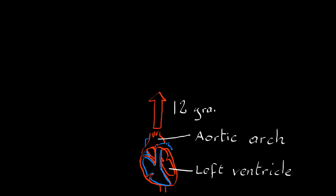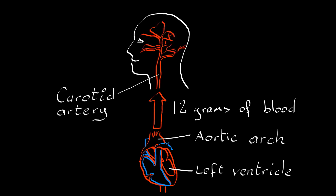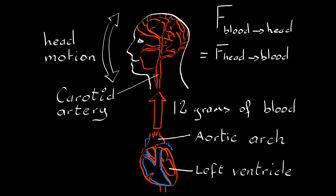Now you might wonder what causes the head to move like this. At each cardiac cycle, the heart's left ventricle contracts and ejects blood at high speed to the aorta. During the cycle, roughly 12 grams of blood flow to the head from the aorta via the carotid arteries on either side of the neck. It is this influx of blood that generates a force on the head. Due to Newton's third law, the force of the blood on the head equals the force of the head acting on the blood, causing a reactionary cyclical head movement.